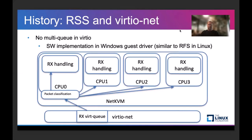So what was happening before? Before there was a multi-queue implementation in VirtIO, we had a software implementation in the Windows guest driver for RSS, very similar to RFS in Linux. As you can see in this diagram, we had actually one RX queue. It was interrupting the guest and interrupts went to only one specific CPU. Then packet classification actually happened in the device driver and not in hardware as previously discussed, and we rescheduled the actual packet completion to the needed CPU.